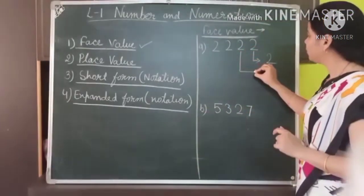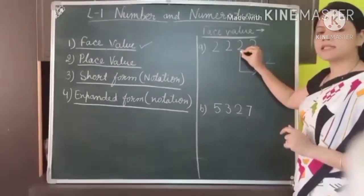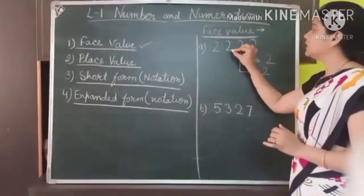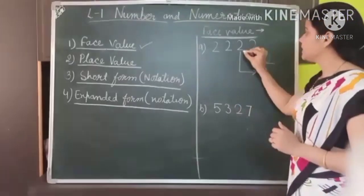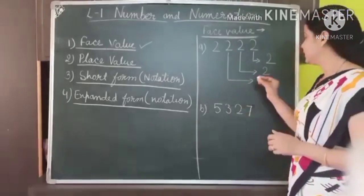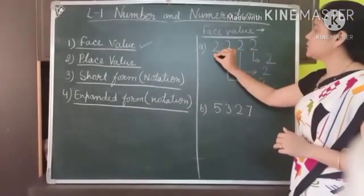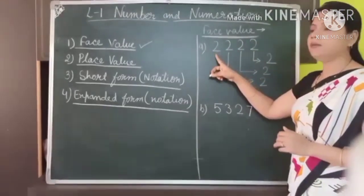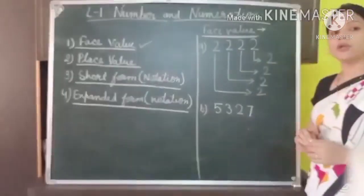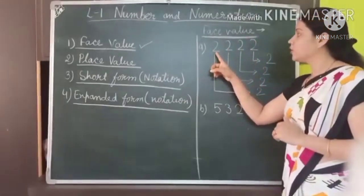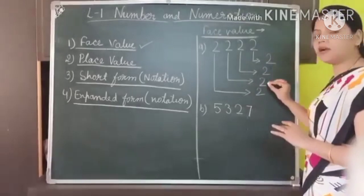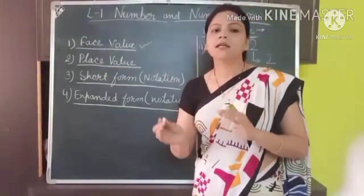Now the face value of this 2, which is at the 10's position, is again 2. This 2 is placed at the 100's position, but the face value of this 2 is still 2. And this 2 is placed at the 1000's position. So here we can see that since the number is 2,222, all the 2s have the same face value, because face value means the digit itself.